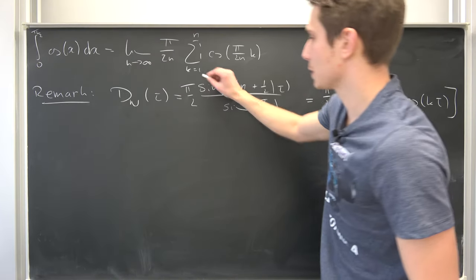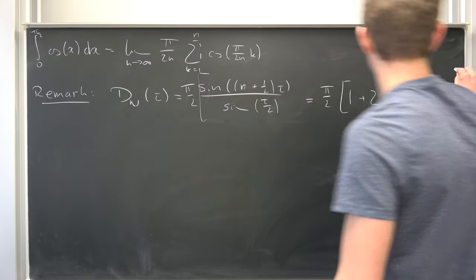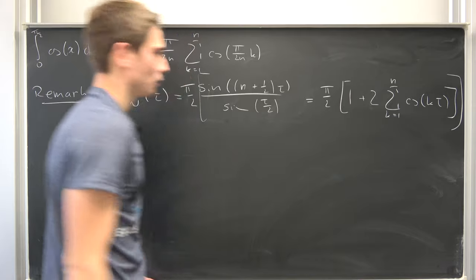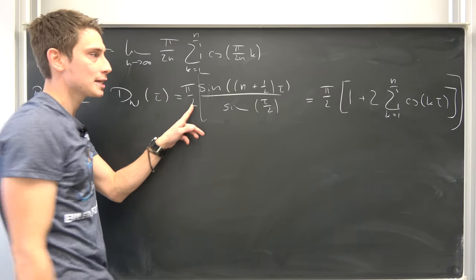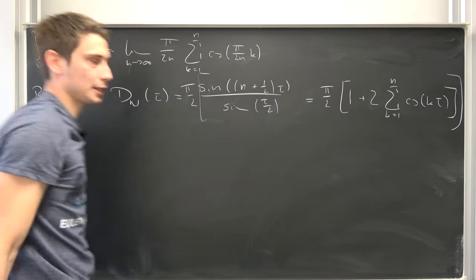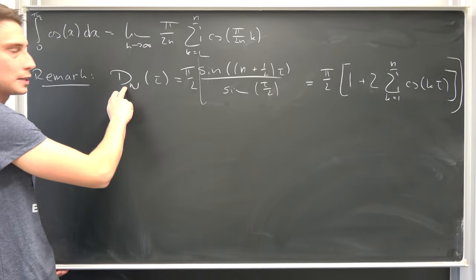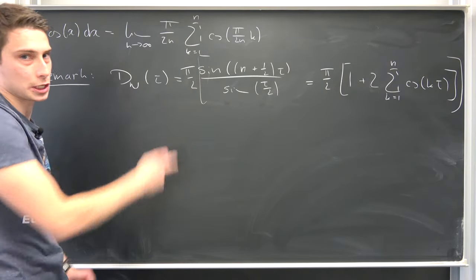So let us focus on this part right here. What we can do is cancel out the pi over 2 on both sides to get those two being equal. This is just 2 over pi times the Dirichlet kernel in this case.